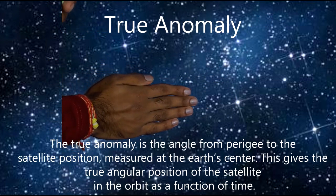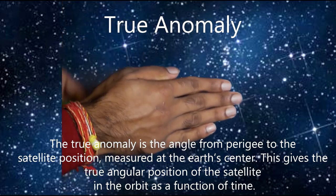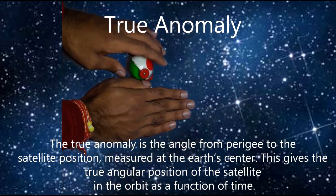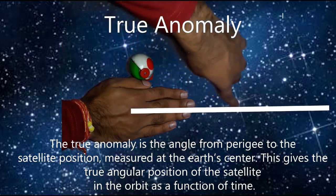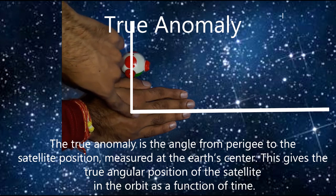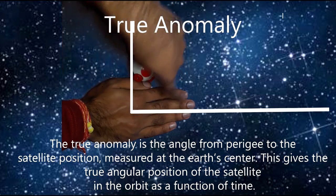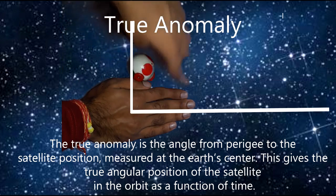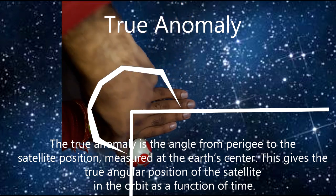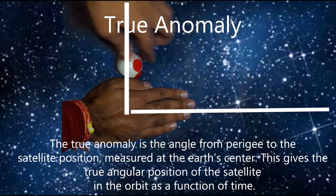Talking about true anomaly — true anomaly is related to the satellite. Consider this is the satellite and it will orbit like this. True anomaly is the angle measured from the perigee to the satellite position, measured at the center of the earth. So the angle between the perigee line and the satellite line, measured at the earth's center, is our true anomaly. If the satellite would be here, the angle would be this big. If it would be at the perigee, there would be zero angle.